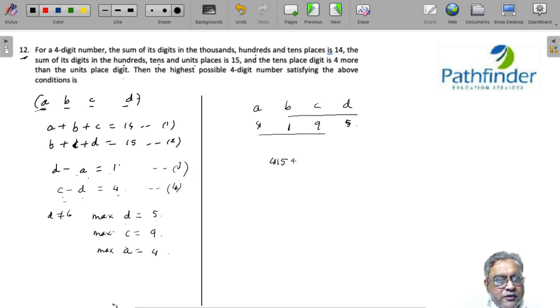So the biggest possible number or the largest possible number is 4195. That is your answer.